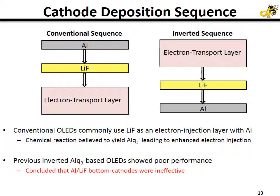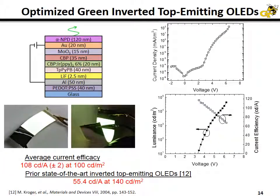And that turned out to be the case. After much optimization, we arrived at the device shown in the upper left corner, which we later published. As you can see, there is a very smooth J-V curve and a very low turn-on voltage of about 3.4 volts.